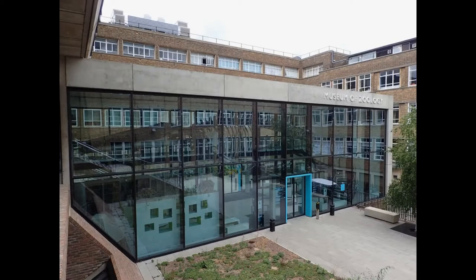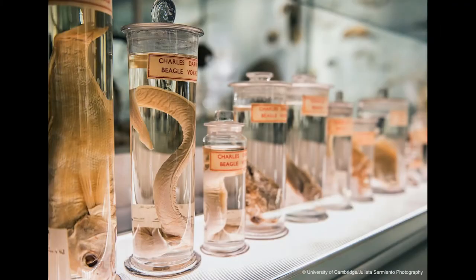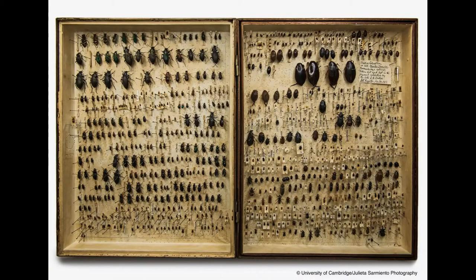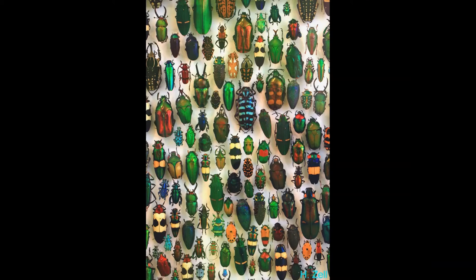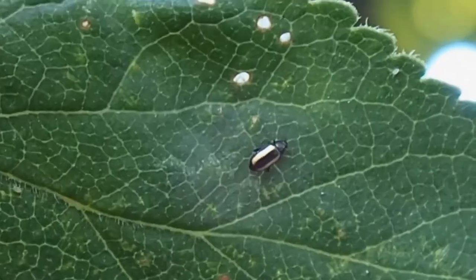The University Museum of Zoology at Cambridge does have a lot of Darwin specimens, including some of his famous finches and other material from the Galapagos Islands. But probably more notable is his collection of beetles — that very same collection that he started as an undergraduate and carried on developing throughout his life. Although Darwin didn't use his beetles in developing his evolutionary theories, he was right to be obsessed by them. Beetles are extraordinarily diverse: half a million species have been described so far, and estimates suggest this is just a small fraction of the total number that exist.